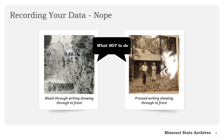You can see here that writing in ink on the reverse of a photograph can either bleed through to the front of the image, or if the writer pressed down hard enough, the pen marks can cause indentations that affect the image on the front as pictured here.